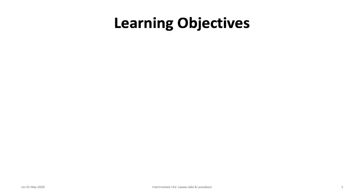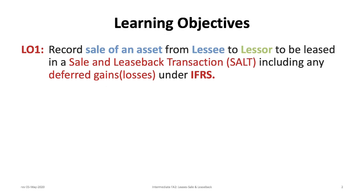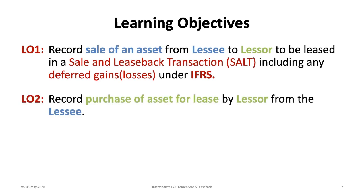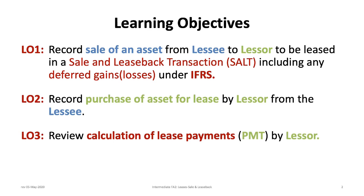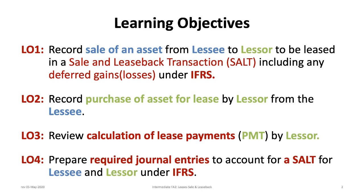This tutorial has four learning objectives. The first is to record the sale of an asset from a lessee to a lessor in a sale and leaseback transaction, including any deferred gains or losses under IFRS. The second is to record the purchase of the asset for lease by the lessor from the lessee. The third is to review the calculation of the lease payments by the lessor. The fourth is to prepare required journal entries for the lessee and the lessor under IFRS.